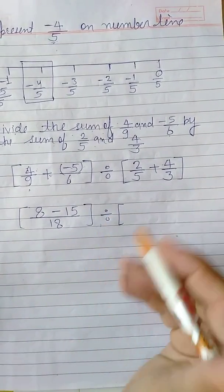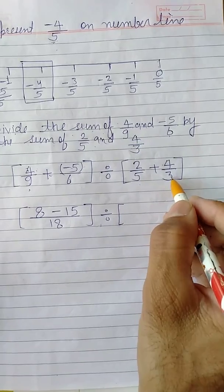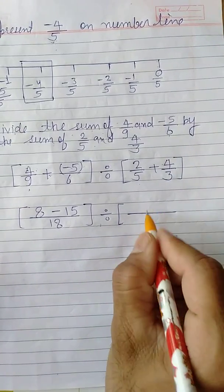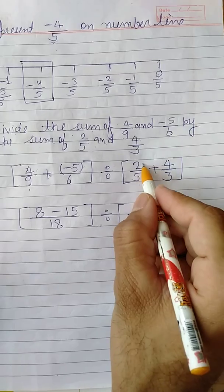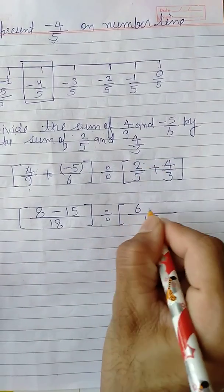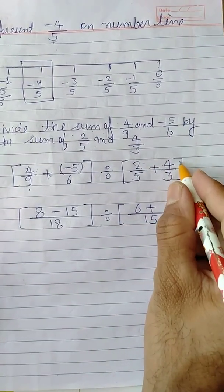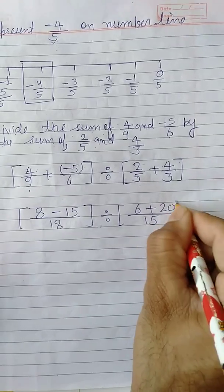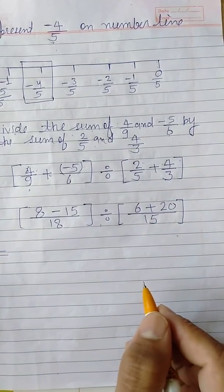Next, 2 upon 5, 4 upon 3. The LCM of these two is equal to 5 3 ja 15. So 3 2 ja 6 plus 3 5 ja 15, 5 4 ja 20, equal.